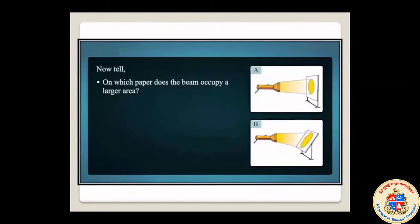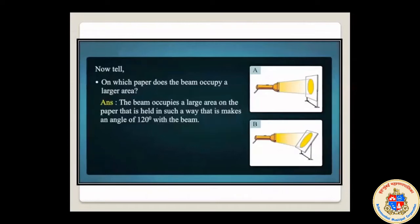On which paper does the beam occupy a larger area? The beam occupies a larger area on the paper that is held at an angle of 120 degrees with the beam. Paper A is perpendicular — at a 90-degree angle — and paper B is at a 120-degree angle, so it is a little bit slanted. That's why the light takes up a larger area on paper B.